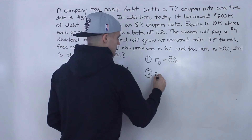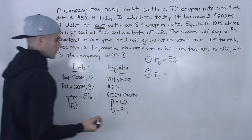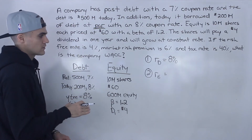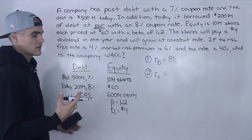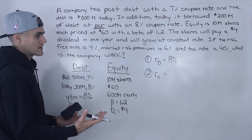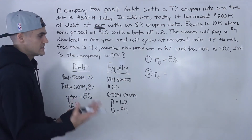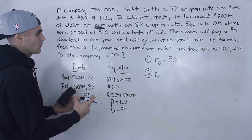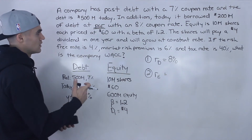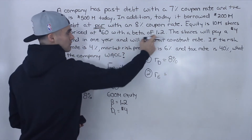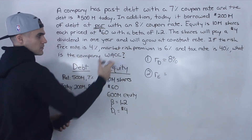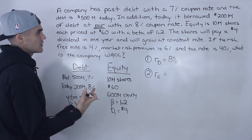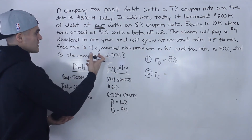Step two is the cost of equity. How can we find the cost of equity? If you remember, the cost of equity can be found either with the Capital Asset Pricing Model or with the Dividend Discount Model. Notice in this question they give us information for both — the beta of the shares, the risk-free rate, and the market risk premium all relate to CAPM, and they also give us information about the dividends.